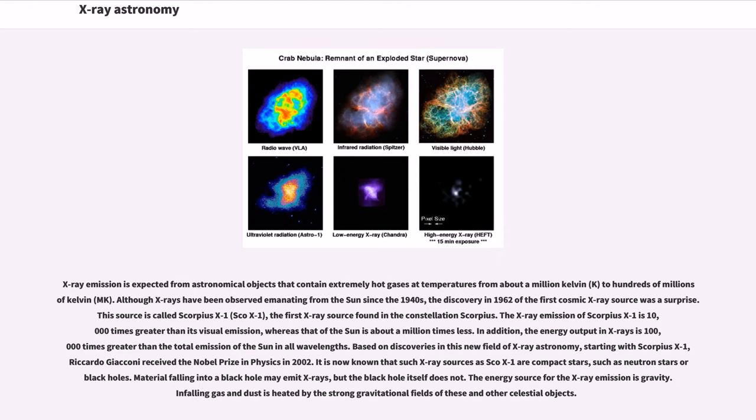X-ray emission is expected from astronomical objects that contain extremely hot gases at temperatures from about a million Kelvin to hundreds of millions of Kelvin. Although X-rays have been observed emanating from the Sun since the 1940s, the discovery in 1962 of the first cosmic X-ray source was a surprise. This source is called Scorpius X-1. The X-ray emission of Scorpius X-1 is 10,000 times greater than its visual emission. In addition, the energy output in X-rays is 100,000 times greater than the total emission of the Sun in all wavelengths.